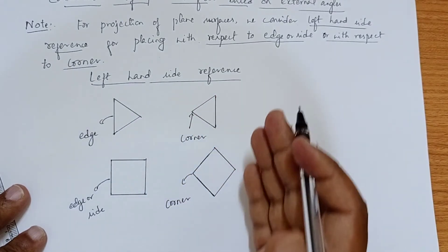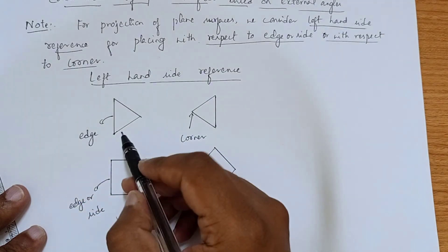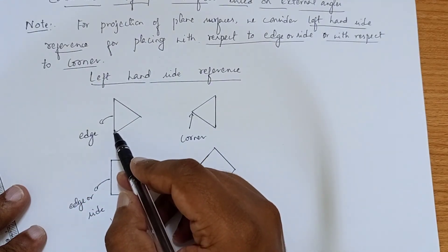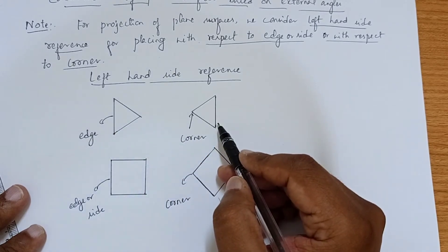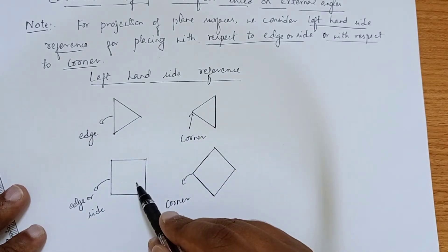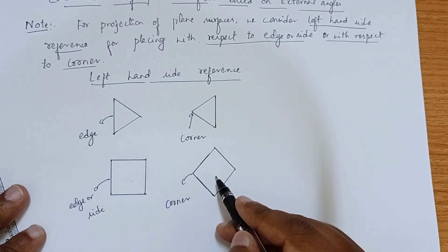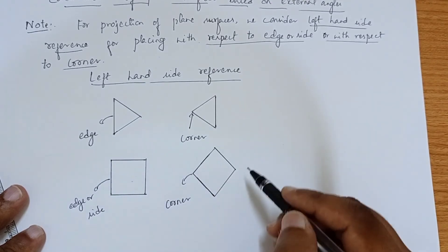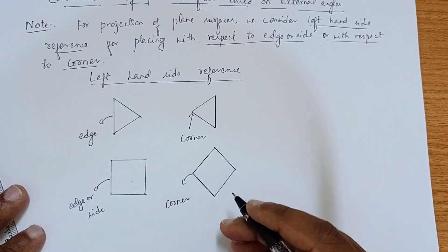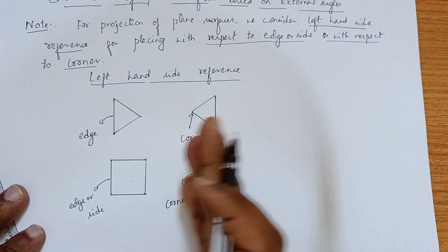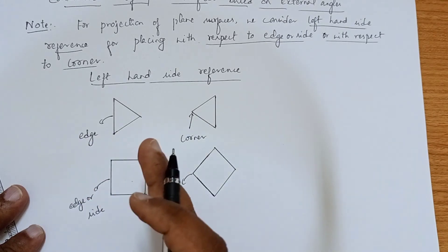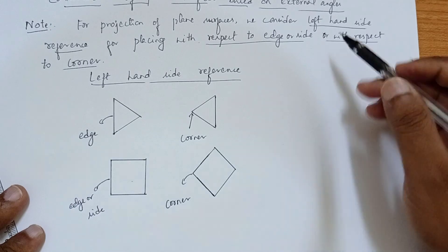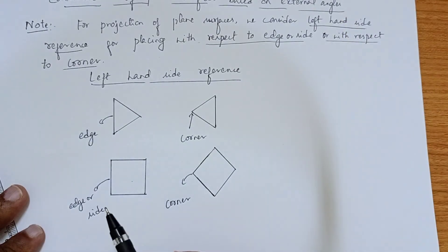Whatever triangle planes we construct, it has to be with respect to the left-hand side reference. This position is the construction of the triangle with respect to edge, this is the triangle with respect to corner, this is the square with respect to edge, and this is the square with respect to corner. Whatever construction of planes you do, it has to be on the left-hand side. We are going to learn the construction of plane surfaces using external angles on the left-hand side reference.